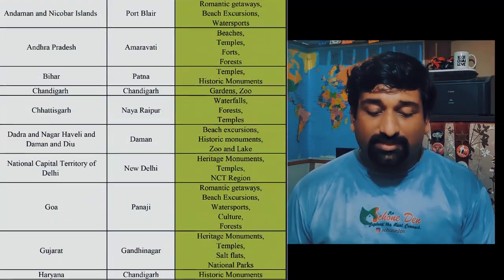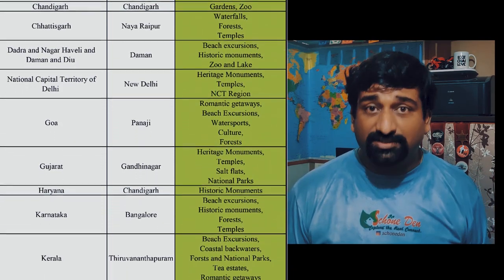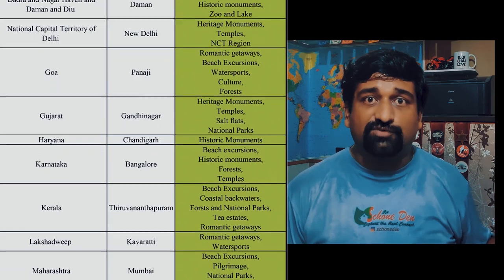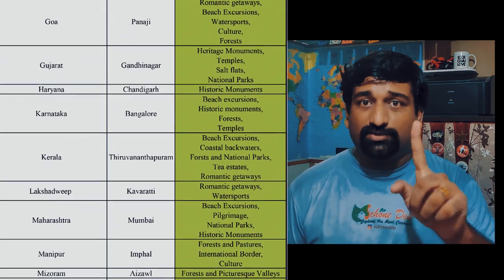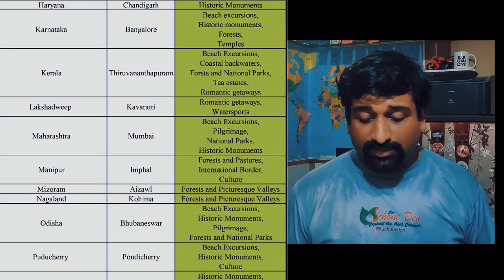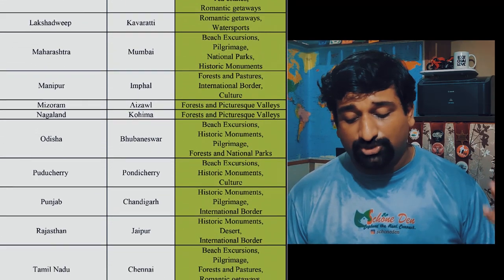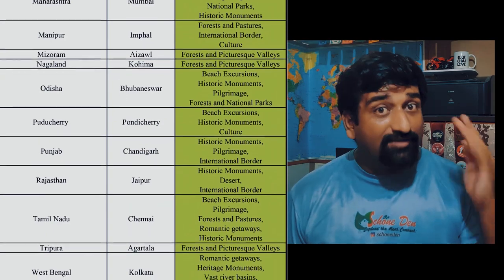The ideal places to visit in January in alphabetical order: Andaman and Nicobar Islands, Andhra Pradesh, Bihar, Chandigarh, Chhattisgarh, Dadra and Nagar Haveli and Daman and Diu, Goa, NCT of Delhi, Gujarat, Haryana, Karnataka, Kerala, Lakshadweep, Maharashtra, Manipur, Mizoram, Nagaland, Odisha, Puducherry, Punjab, Rajasthan, Tamil Nadu, Tripura, and West Bengal. Don't take notes — head over to the article after this video where you can download these exact charts.